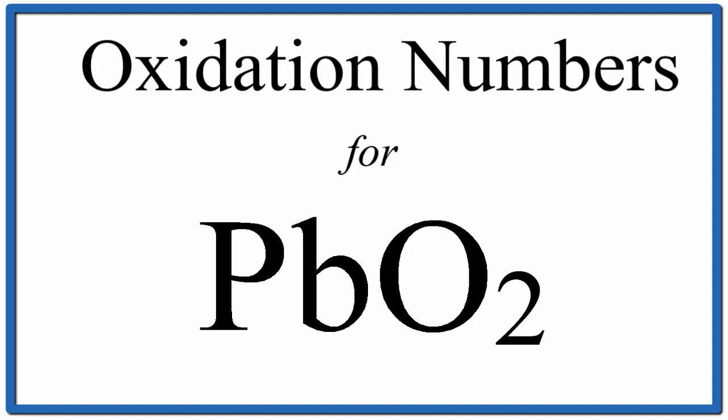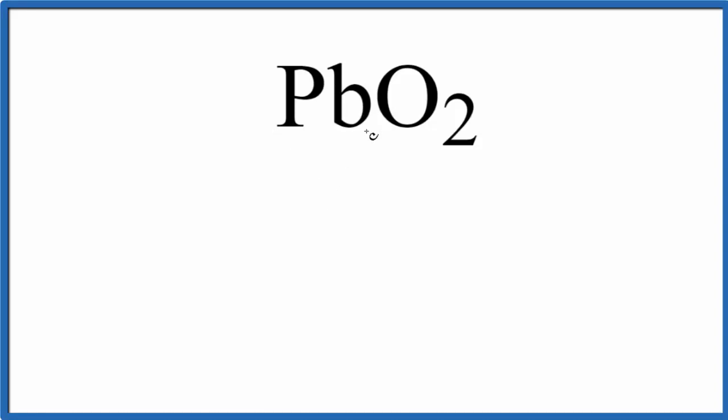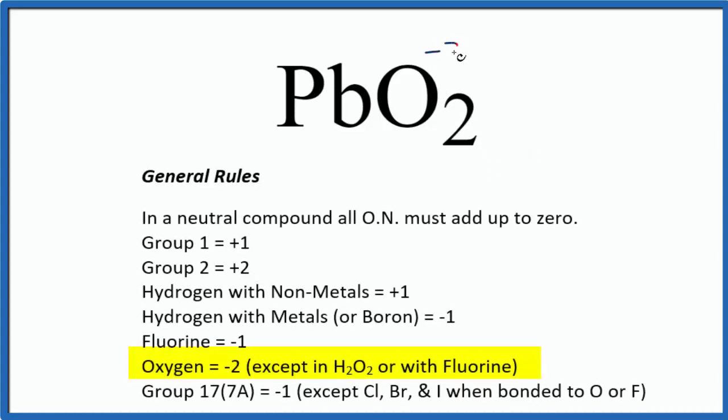To find the oxidation numbers for Pb in PbO2, that's lead four oxide, we know that all of the oxidation numbers are going to add up to be zero. We also know that oxygen is normally minus two.